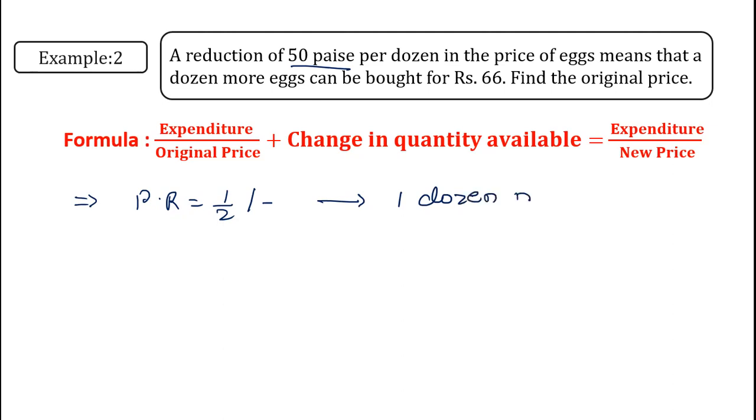One dozen more eggs we can purchase for rupees 66. Now see, one dozen more is the change in quantity available. Change in quantity available is one dozen. For rupees 66 gives you the expenditure.